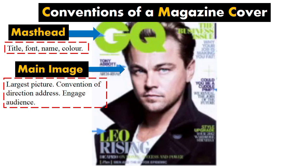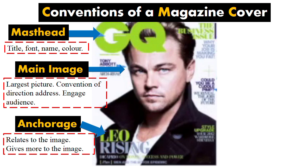Now you've got anchorage. Anchorage is any text on a front cover that refers to the image. This actor is called Leonardo DiCaprio, and here you have some anchorage — text relating to him. It says 'Leo Rising: DiCaprio on money, success, and power.' This will change how you view the image, creating connotations that Leonardo DiCaprio has money, that he's successful, and he's got lots of power. Without this writing, you might not have thought that, but this anchorage changes the meaning.